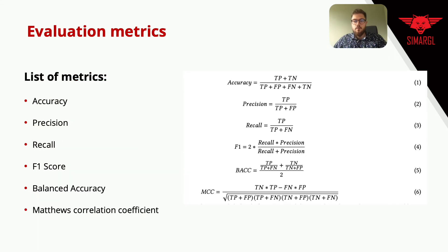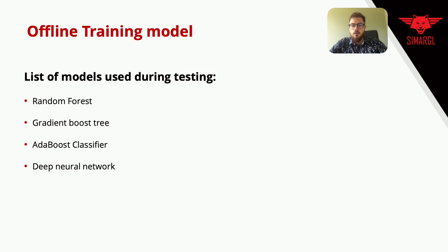In this paper, a standard set of well-known metrics was used to evaluate the approach: accuracy, precision, recall, F1 score, Matthews correlation coefficient, and balanced accuracy — all calculated using the confusion matrix. The research focused on the following machine learning methods: deep neural networks, the random forest classifier, the AdaBoost classifier, and the gradient boost trees classifier.